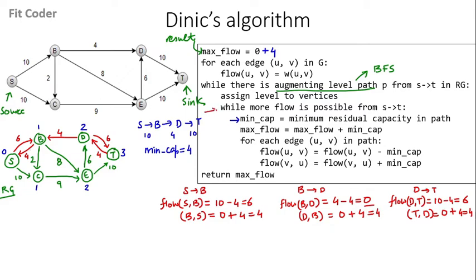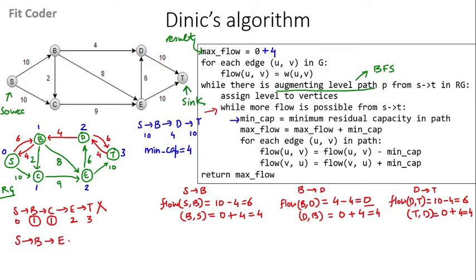We finished the path from S to T. We come back to the inner while loop checking if more flow is possible. One possible path is S to B to C to E to T, but B and C both have a level of 1, so this is not an augmenting level path. The next valid path is S to B to E to T. Level of S is 0, B is 1, E is 2, and T is 3 — levels are strictly increasing, so this path is valid. More flow is possible from S to T, so we enter the while loop.